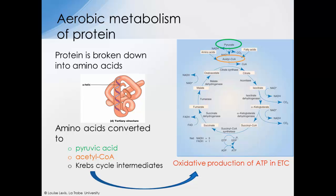Now on to the aerobic metabolism of protein. The building blocks of proteins are amino acids, so if you imagine protein taken in through the diet, the protein is broken down to individual amino acids. Those amino acids can then be converted into pyruvic acid, acetyl-CoA, or Krebs cycle intermediates — meaning substrates within the Krebs cycle. So amino acids can produce energy via pyruvate, acetyl-CoA, and the Krebs cycle intermediates, and the NADH and FADH that are produced give up their electrons to the electron transport chain and produce energy in the same way as aerobic metabolism of glucose and fatty acids.